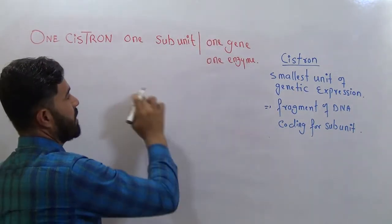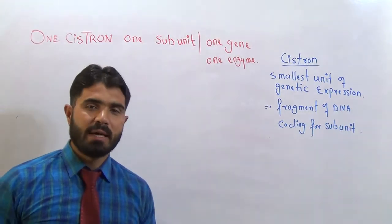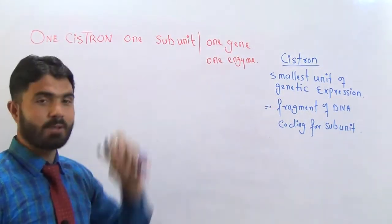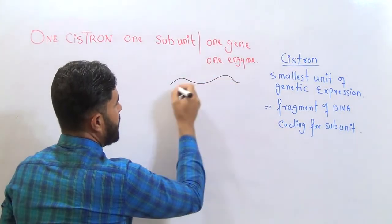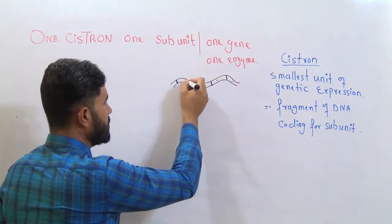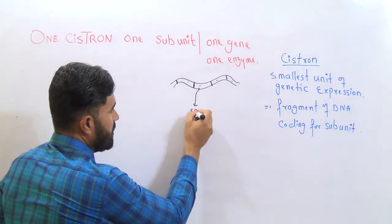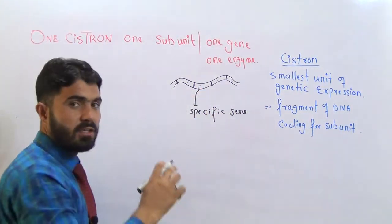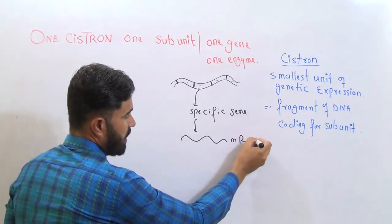Before that concept, we had an old concept: 'one gene one enzyme.' Some students may be familiar with this topic but others may not, so I would like to give it a small touch. One gene one enzyme means that if this is the DNA, and there are many genes on that DNA — gene 1, gene 2, gene 3, gene 4 — when any one specific gene is copied, it is copied in the form of messenger RNA.